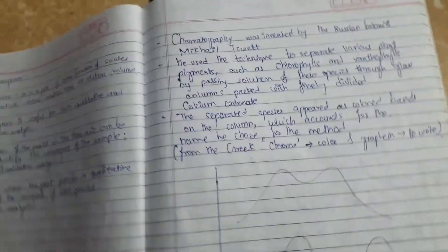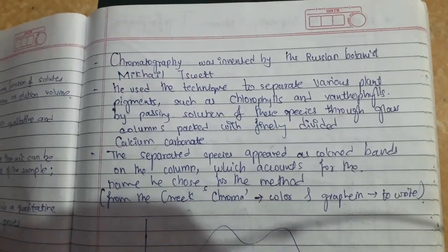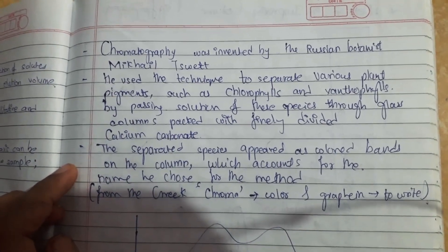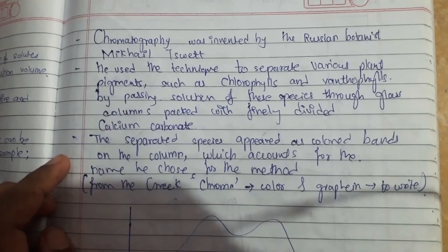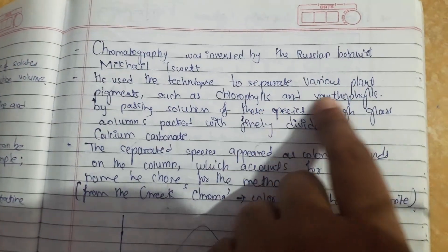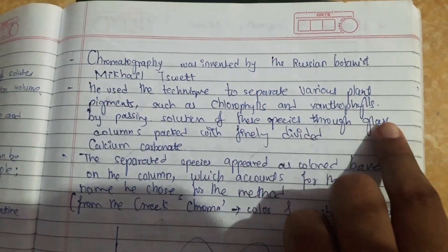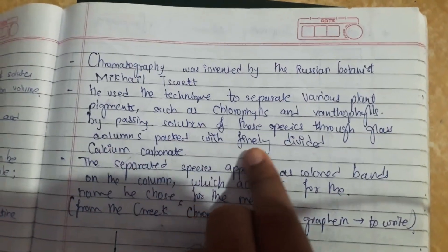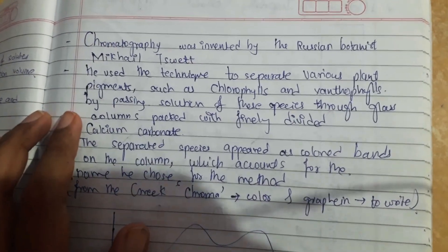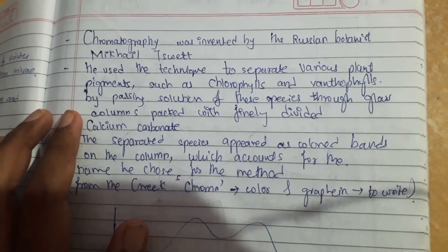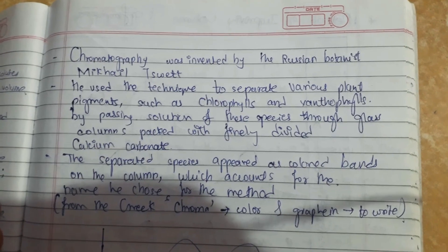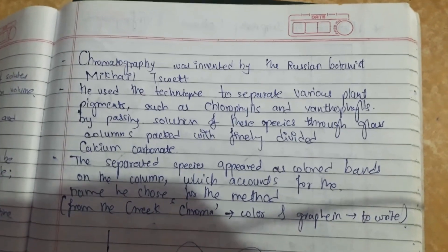Now here we will know that chromatography was first invented by the Russian botanist Mikhail Tswett. He used it to separate various plant pigments such as chlorophyll and xanthophyll by passing solutions of these species through a glass column packed with finely divided carbonates. This Russian botanist created chromatography to separate plant pigments like chlorophyll and xanthophyll.